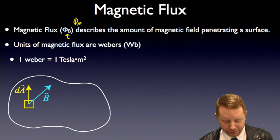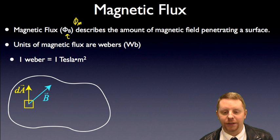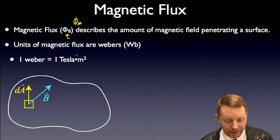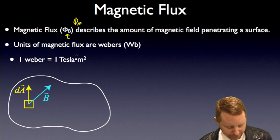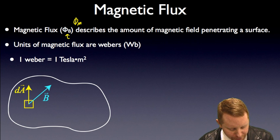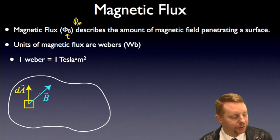Now the units of magnetic flux are Webers, where one Weber is equal to a Tesla times a meter squared. So just like we did with electric flux, we're going to define a little bit of area, and the normal to that area is coming right out of it, and say we have a magnetic field coming through that as well.